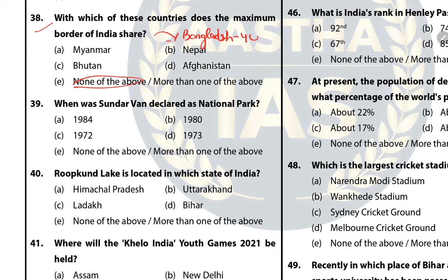The India-Bangladesh border is 4096 km. Question 39: When was Sundarban declared as a national park? The answer is A — 1984. Question 40: Roopkund Lake is located in which state of India? The answer is B — Uttarakhand.